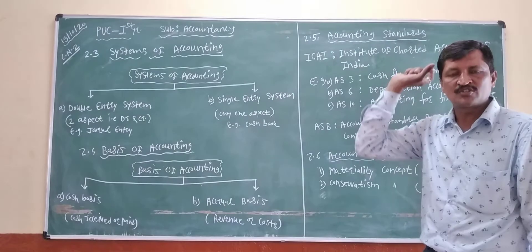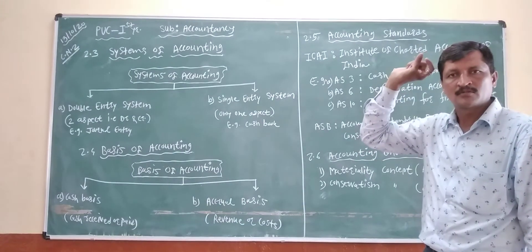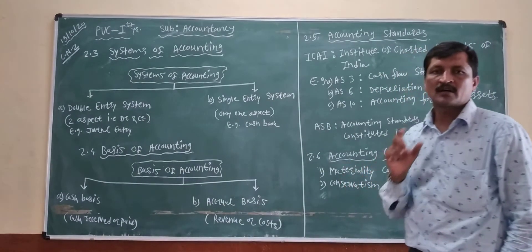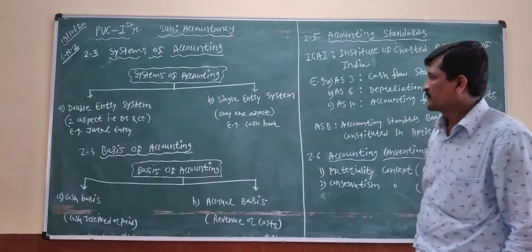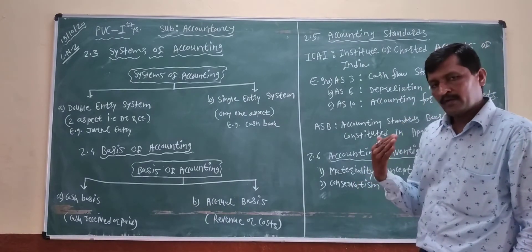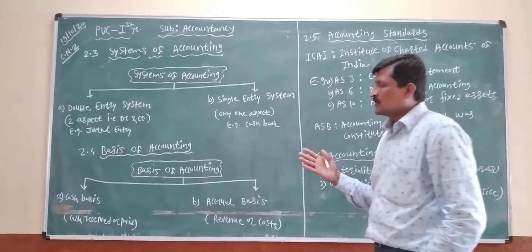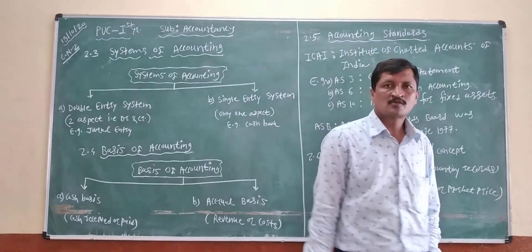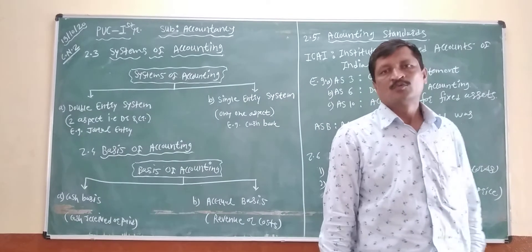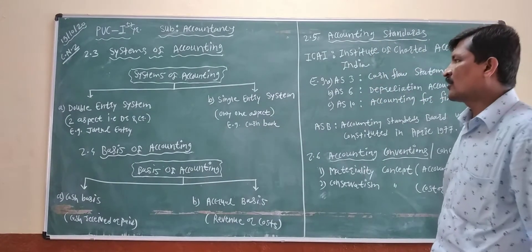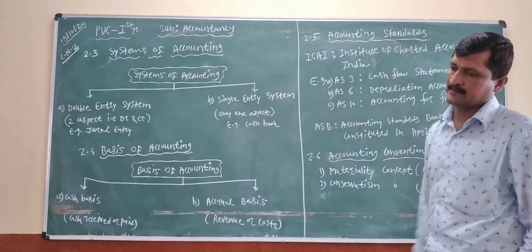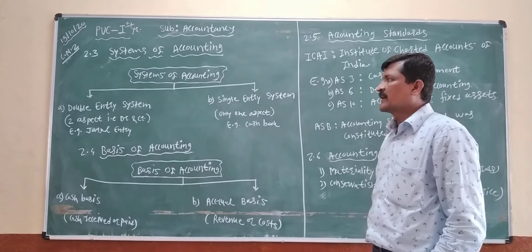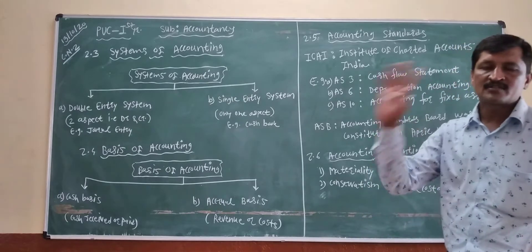We are recording many business transactions, so that is the main object to find out the correct or accuracy. In double entry system, transactions are recorded in two aspects — one is a debit, another is a credit. That is called a double entry system.